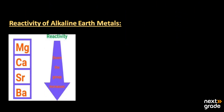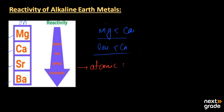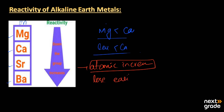Moving to the reactivity of alkaline earth metals — Group 2a — which includes magnesium, calcium, strontium, and barium: magnesium is less electropositive and less reactive compared to calcium. The reason is the same — as we move from top to bottom, atomic size increases, so atoms can lose electrons more easily, making them more electropositive and more reactive.